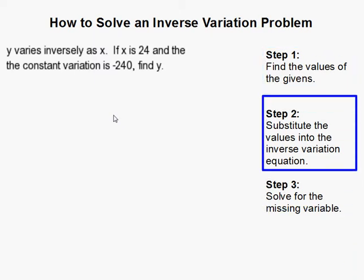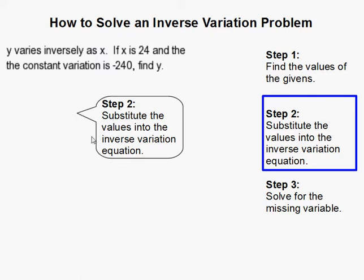We need to substitute those values into the inverse variation equation, and that equation happens to be y equals k over x, where k is equal to the constant of variation.